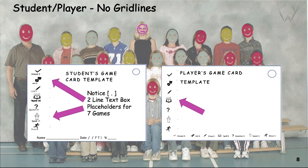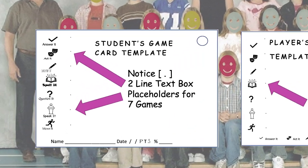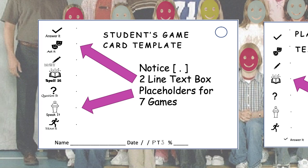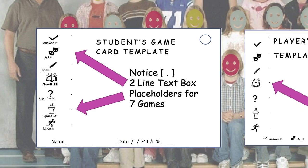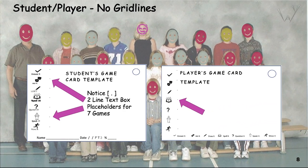Seven placeholder text boxes are aligned with the seven games of WAI. The font is Comic Sans 8-point. There are two lines. Learn the names of the seven games and the symbols associated with each.